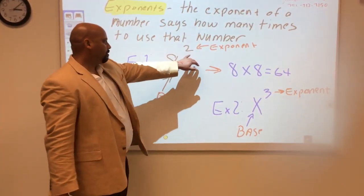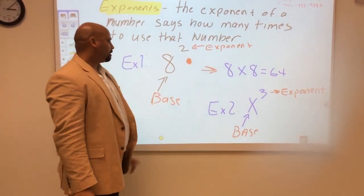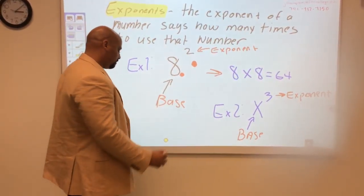So the exponent is always the number at the top. It's also called the superscript. Sometimes you have numbers at the bottom. They're called the subscript.